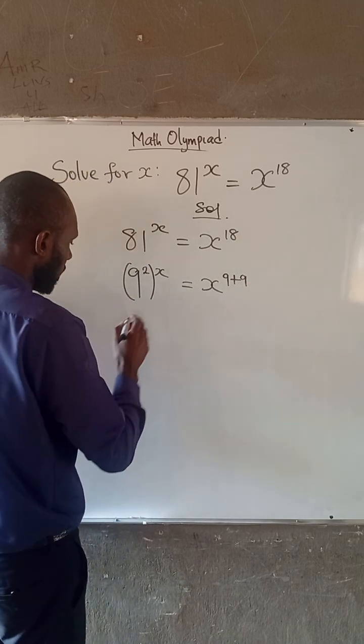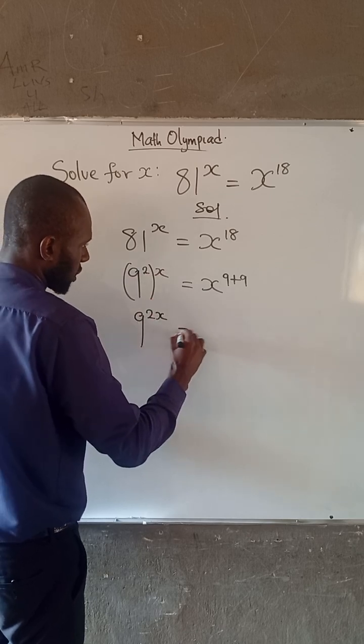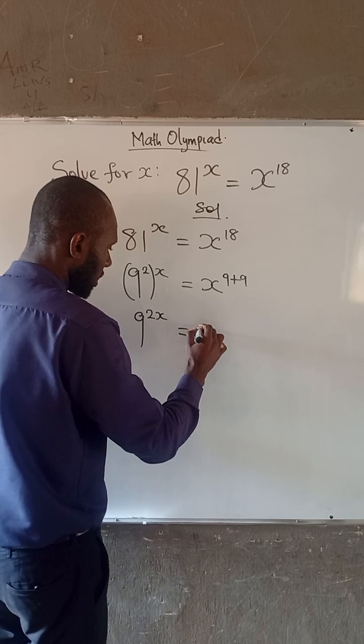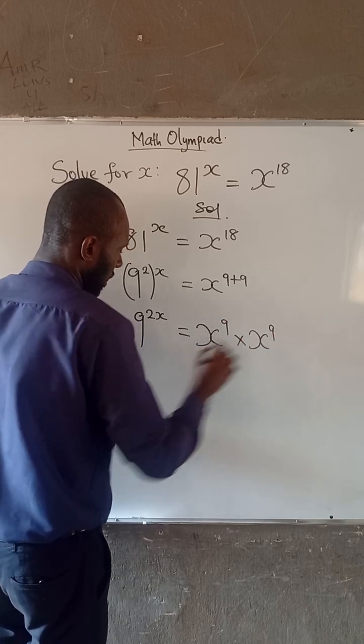Now at this point we have that 9 to the power of 2 times x is 2x equal to here. From the laws of indices, this can be as well as 2 to the power of 9 times 2 to the power of 9.